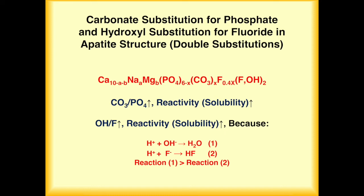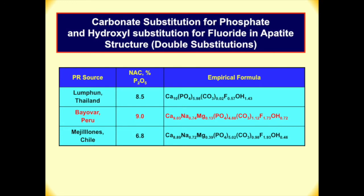So with double substitution — high double substitution and high carbonate substitution — you get high reactivity of the phosphate rock. For example, here we have a lump phosphate rock from Thailand. Neutral ammonium citrate solubility is 8.5 — quite high. The carbonate substitution is only 0.02, very low. But it has a high OH substitution of 1.43, which explains why it has high solubility.